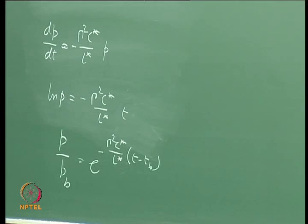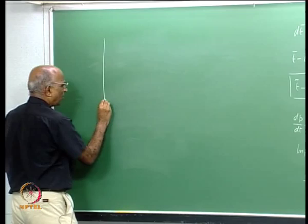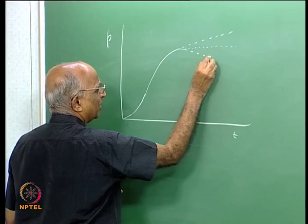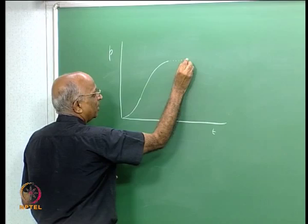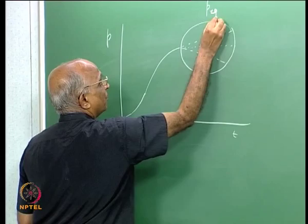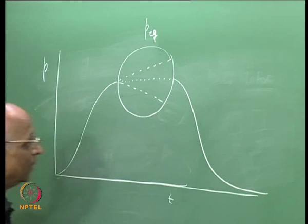Why do we do all this? We have established that whenever a rocket motor ignites, the pressure changes with time: it starts slowly, builds up with flame spread, and then reaches a steady state. If burning is neutral, pressure is flat; if progressive, it rises; if regressive, it falls. This zone is the equilibrium pressure, i.e., the steady-state pressure. At the end, all propellant is consumed and pressure decays back. The initial rise is the ignition transient.